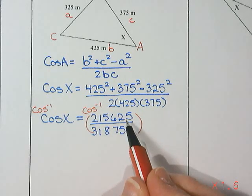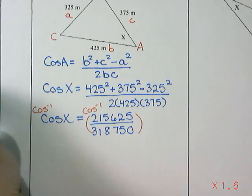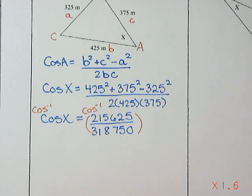Now, you could work out 215,625 divided by 318,750 first, and then write that whole decimal down, but I prefer not to have to write the decimal down if I don't have to.